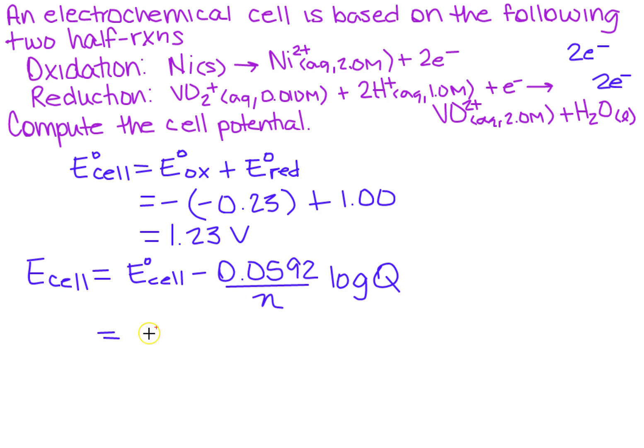Well we just found this E of the cell, so that's 1.23 volts minus the constant. Remember that's also in volts. We said there's how many moles of electrons? We did that right here, so there's two.